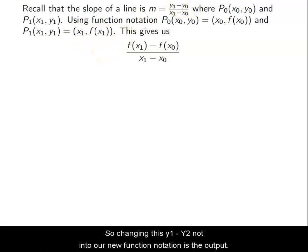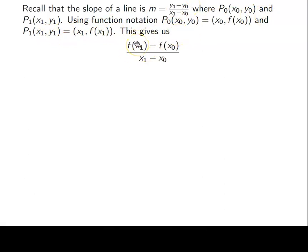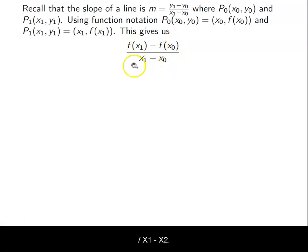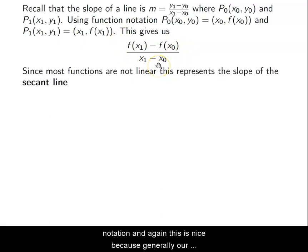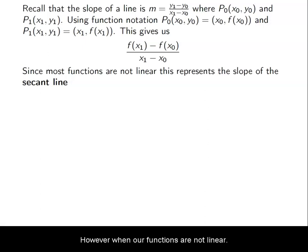So changing y1 minus y0 into our new function notation gives us the output of x1 minus the output of x0 over x1 minus x0. So again, very similar — we've just changed it to function notation. And again, this is nice because generally our functions are not lines, they're not linear functions.